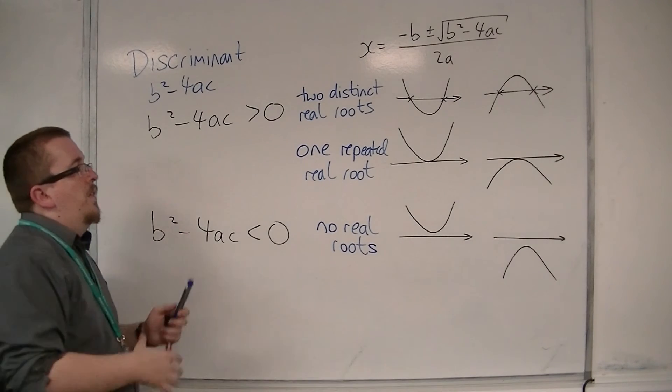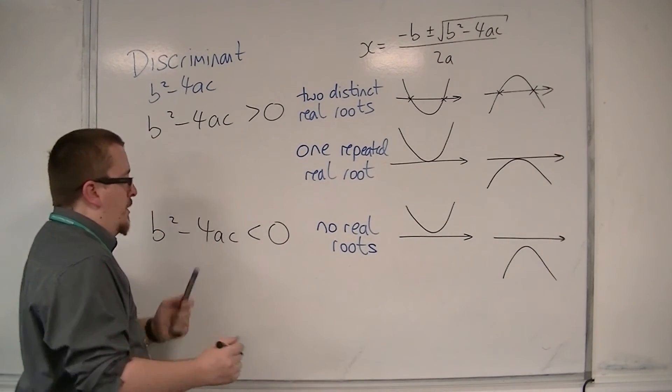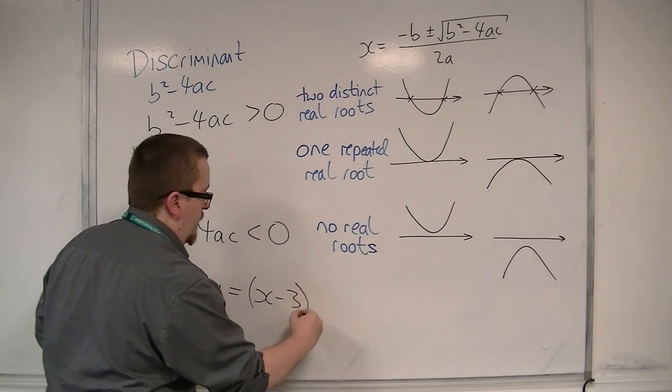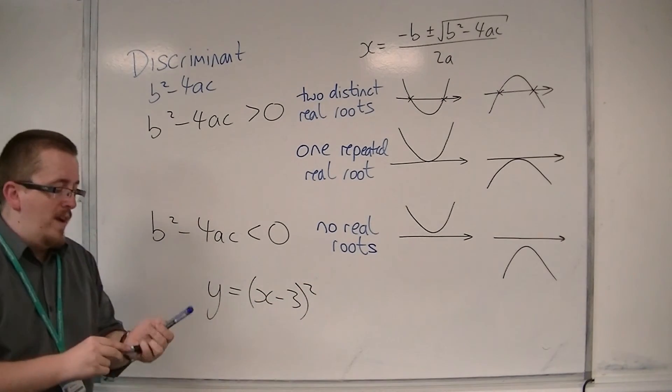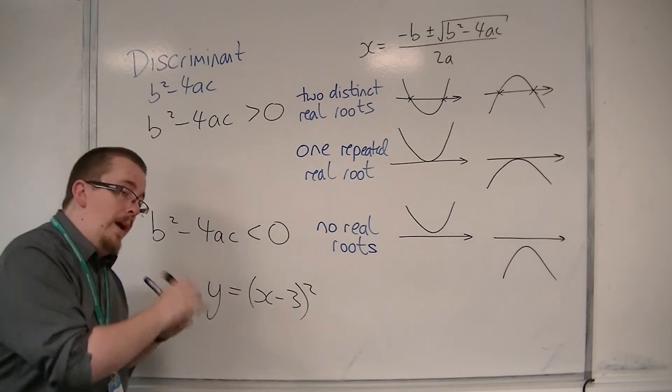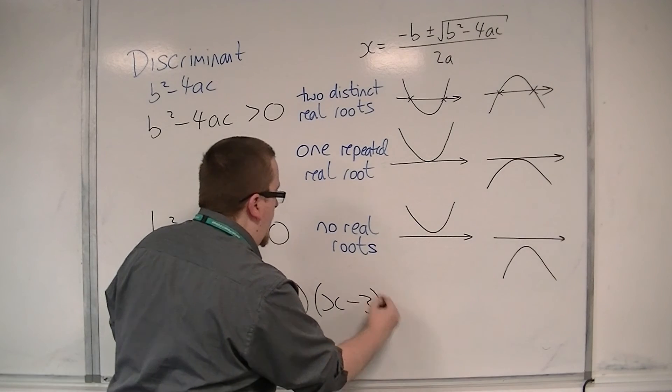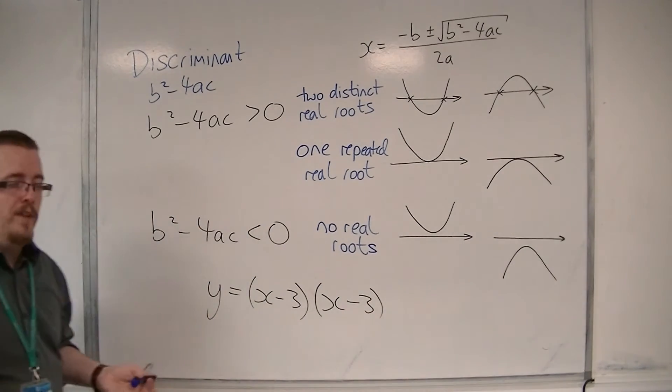So that is when you get equations, quadratics that look like this, for example, where you have both brackets when factorised are the same. So you have a repeated root, because x is 3 is repeated twice, effectively.